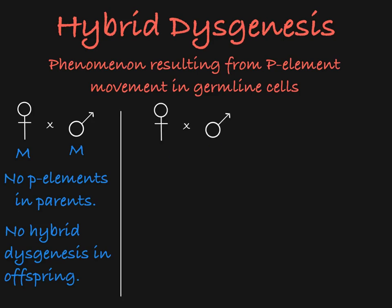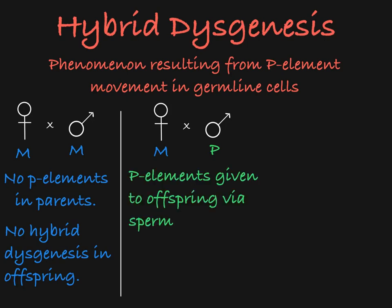In a cross between a male P strain fly and a female M strain fly, the male fly donates DNA carrying P elements in his sperm, while the female fly donates DNA without P elements in her egg. In this situation, hybrid dysgenesis does occur in the germline of the resulting offspring, and the P element can jump to different locations in the genome, potentially becoming mutagenic if it lands in a gene.